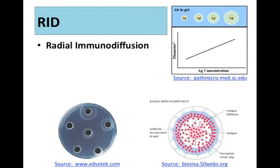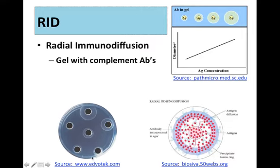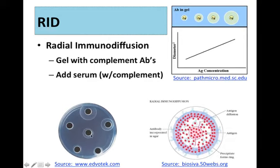RID stands for radial immunodiffusion. In this kind of test, if you're looking for complement proteins, you have a gel that has embedded in it antibodies specific for the complement protein you're looking for. You take the patient's serum — assuming it has some complement in it, they weren't totally deficient — and you add it to a little hole in the gel. When you add the serum in, the complement proteins, which are acting as the antigen, will diffuse out into the gel. The antibodies for that protein will then react with the complement.